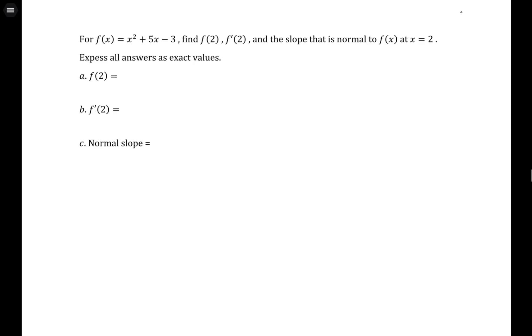Starting with the first, that's pretty straightforward. We're just evaluating the function itself. So 2 squared plus 5 times 2 minus 3 would be 4 plus 10 minus 3, or 11.